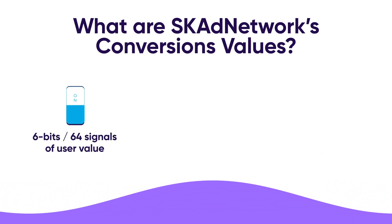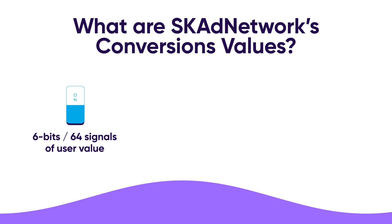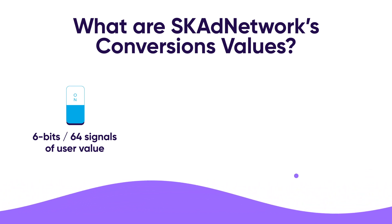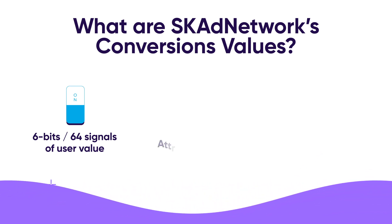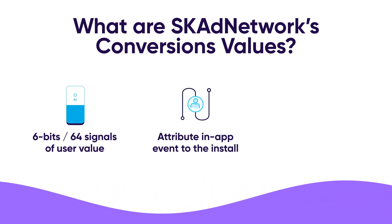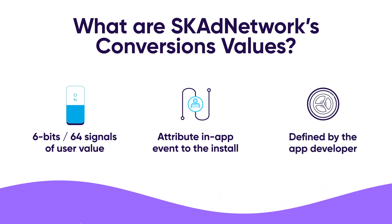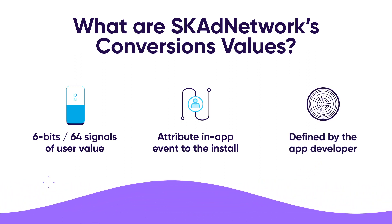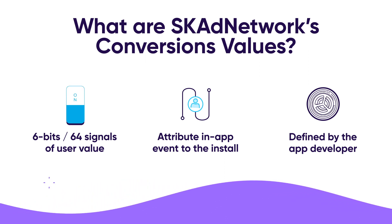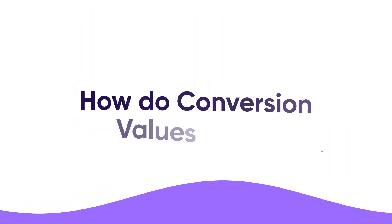A conversion value represents an action done by a user in an app — for example, a purchase or the completion of a level in a game. This value is then attributed to the source of the install to enable campaign measurement. The value is configured by the developer, and it represents a characteristic that the developer believes is a reliable indicator of the value of that user.